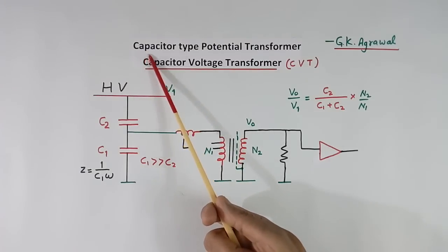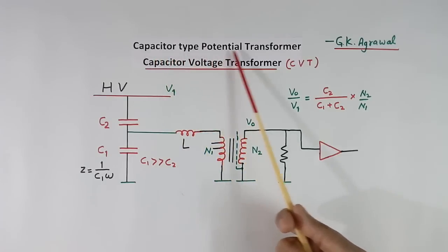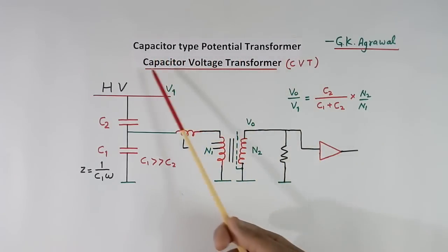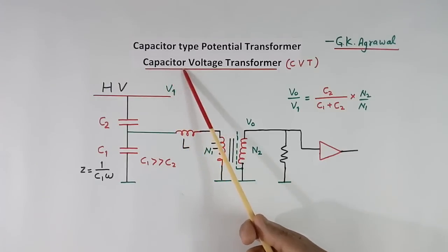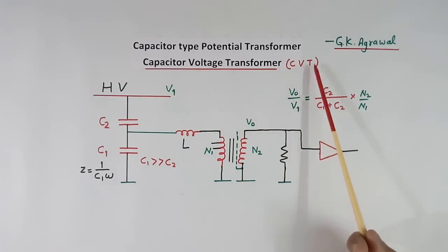Today I will explain capacitor type potential transformer, which is called capacitor voltage transformer, CVT.